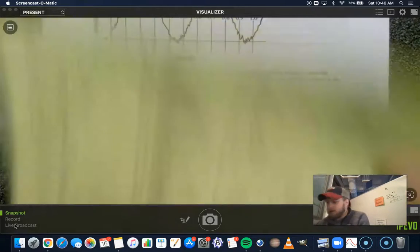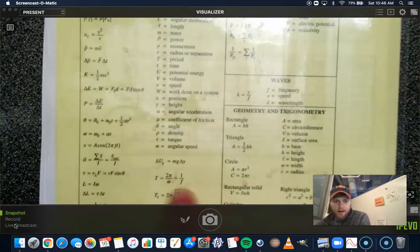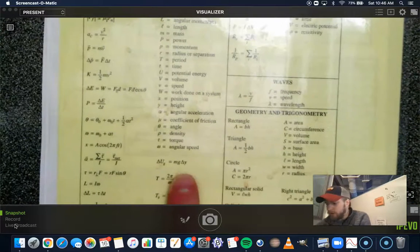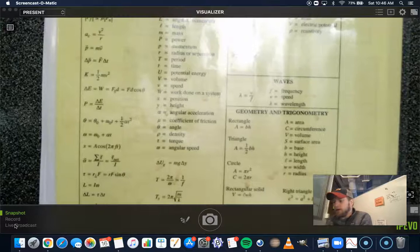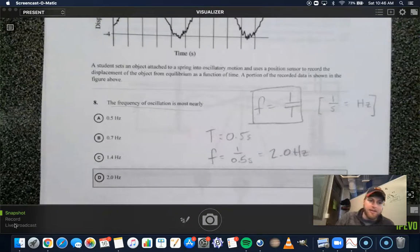And if you ever forget, you'll notice it is right here on our equation sheet. Period is equal to 1 over frequency, or frequency is equal to 1 over period. That's it for number 8, people.